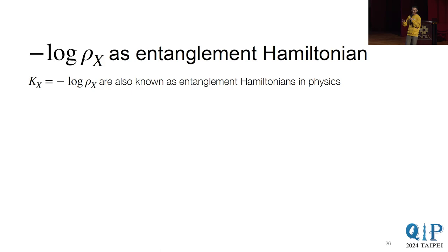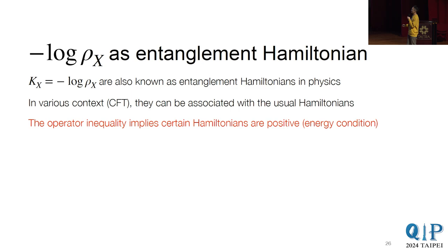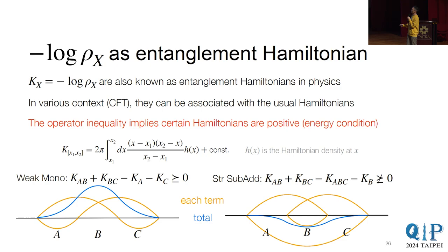So to end the discussion, I'll just leave you with one last intuition, which is that these minus log rho, these are very nice objects in physics, and they're also known as these entanglement Hamiltonians. So you see the word Hamiltonian. So indeed, in various contexts, they can be interpreted as the usual Hamiltonian. And so the moral of this is that these operator inequalities is actually saying certain Hamiltonians are positive. And since I'm running out of time, I'll just quickly say that there's a concrete example for CFT. It can show that the weak monoticity corresponds to having a positive function, and a strong subadditivity corresponding to having a negative function. So in this picture, we can also see why the operator version of weak monoticity is true, but the one for strong subadditivity is false.